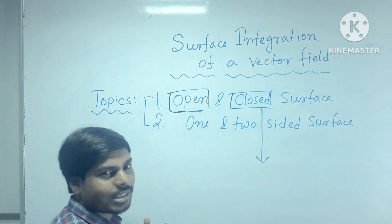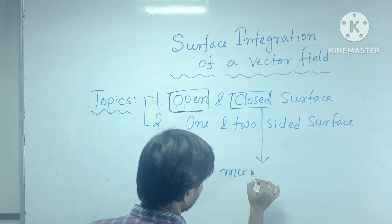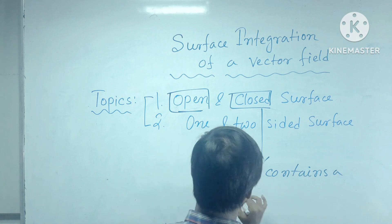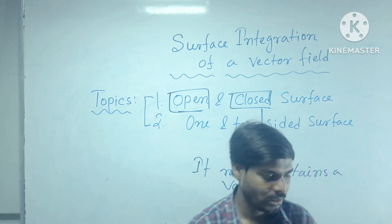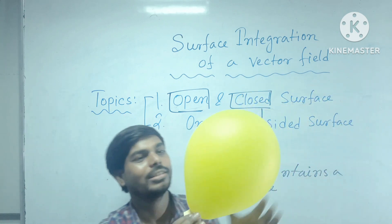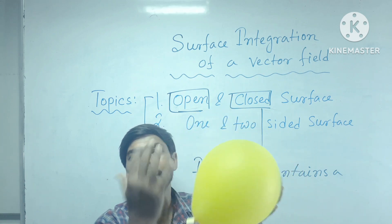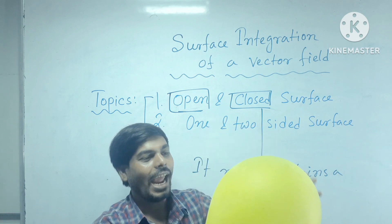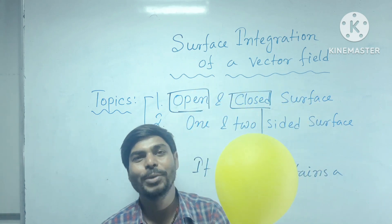Write down these things — later on I will discuss this. Closed surface: it must have one property — it must contain a volume. So let's try to understand with several examples. If you consider a balloon, it is the surface of that balloon. You all know that this balloon is filled with air and it is completely closed from each and every side. This surface contains a volume and it is a closed surface — this is one of the best examples.